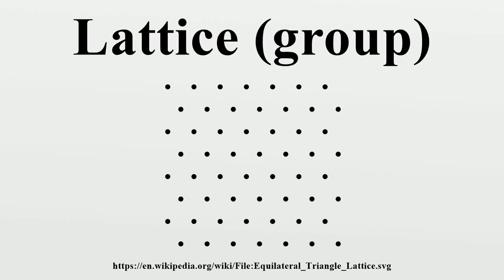In mathematics, especially in geometry and group theory, a lattice in ℝⁿ is a subgroup which is isomorphic to ℤⁿ, and which spans the real vector space.